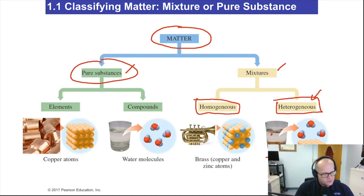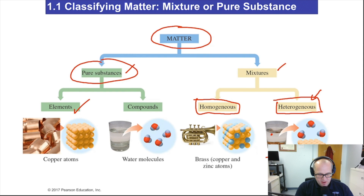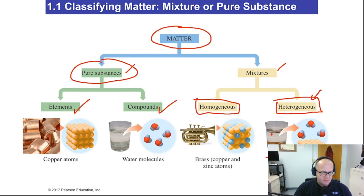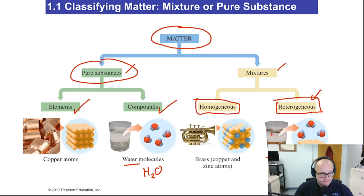Now a pure substance is different — it's pure and contains only one type of atom, which would make it an element, or one type of compound. For example, water. An element contains one type of atom, and compounds contain more than one type of atom. So copper is just the atom copper — it's an element. Water is H2O, so water is a compound because it has two different types of atoms.